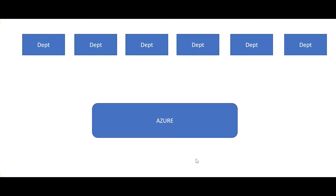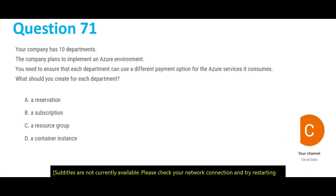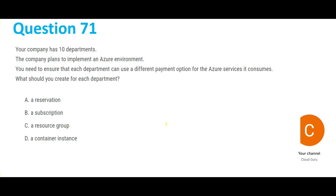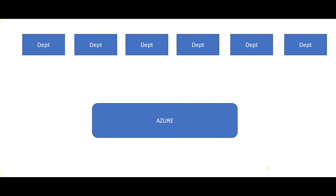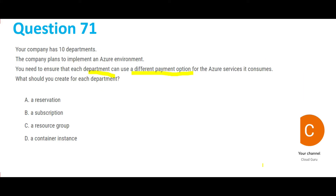Let's jump into this question. You have 10 departments and you want to implement an Azure environment. The keyword here — what changes the game — is that you need a different payment option for the Azure services each department consumes. So each department should have a different payment option. If you want different payment options, you should use subscriptions. You have different subscriptions so that you can look at your own bill. The answer is B — Subscription.